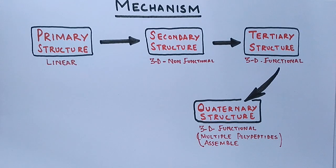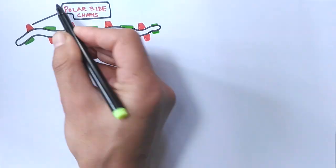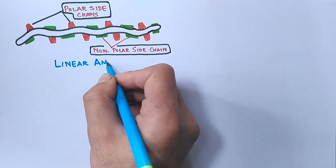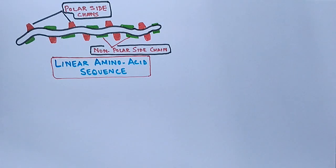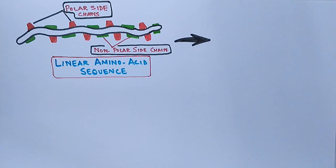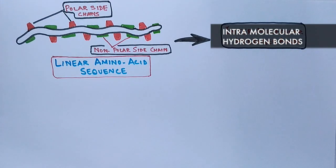In the primary structure, we have a linear sequence of amino acids with polar side chains (shown in red) and non-polar side chains (shown in green). Polar side chains form bonds with water molecules and are hydrophilic, while non-polar side chains are hydrophobic. The information determining how a protein will fold — its final conformation — is encoded in the amino acid sequence. Secondary structure arises from intramolecular hydrogen bonding interactions, forming alpha helices and beta sheets.